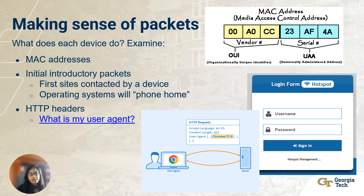When devices access websites or services over the internet, they use HTTP headers to exchange information. In the HTTP headers of packets, you'll find the user agent field. This field provides valuable information about the device's browser. Wireshark can also reconstruct and display data streams — you can right-click any packet and choose follow to see the entire conversation between two endpoints. Your part one task will be to answer questions about the trace such as identifying devices, IP addresses, MAC addresses, and recognizing encrypted and unencrypted data.